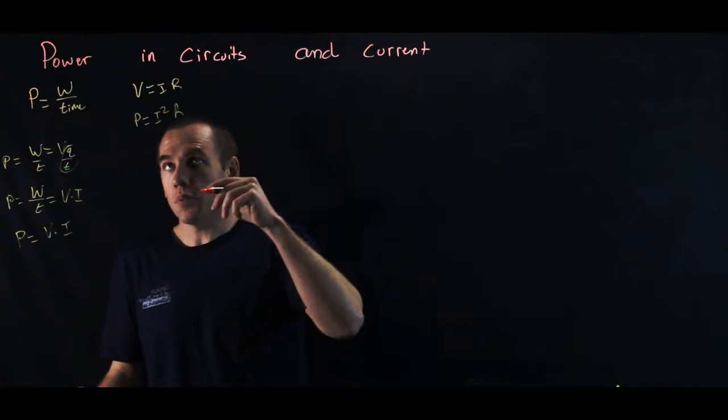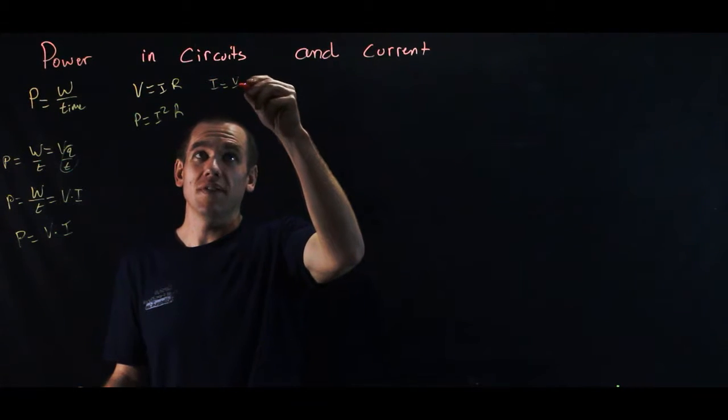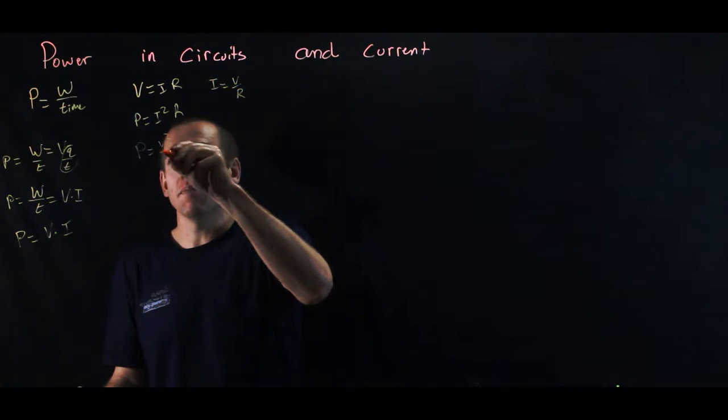We replace V with IR, or if we solve for I, we can see that I is equal to voltage divided by resistance, and so P equals V squared over R.